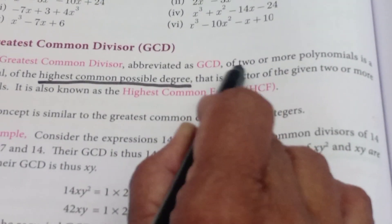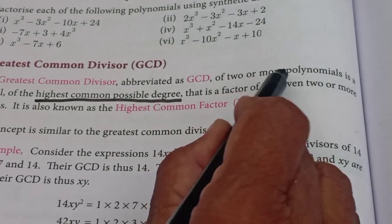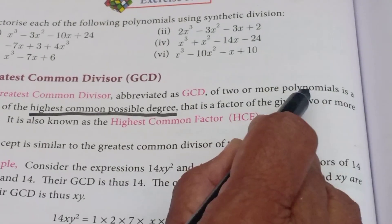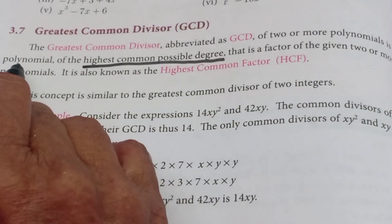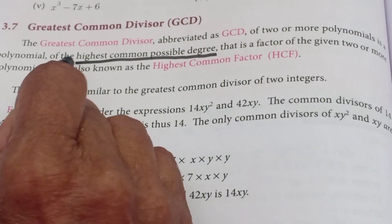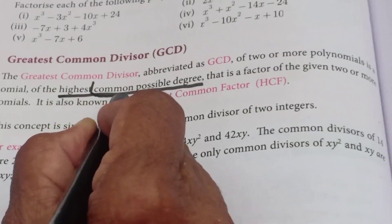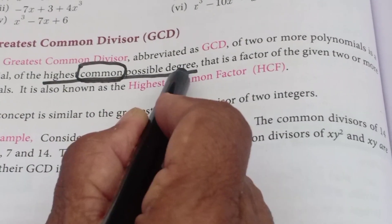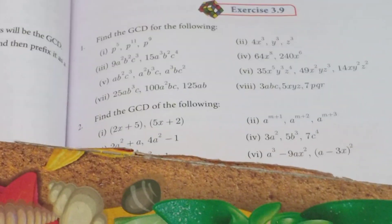So minimum two should be there. How many polynomials should be there? Minimum two, two or more polynomials. GCD of two or more polynomials is a polynomial — the answer is also a polynomial — of the highest common possible degree. This word is most important: common. So let us go to the exercise. Already I explained everything. Here I am going to tell you, just recall.